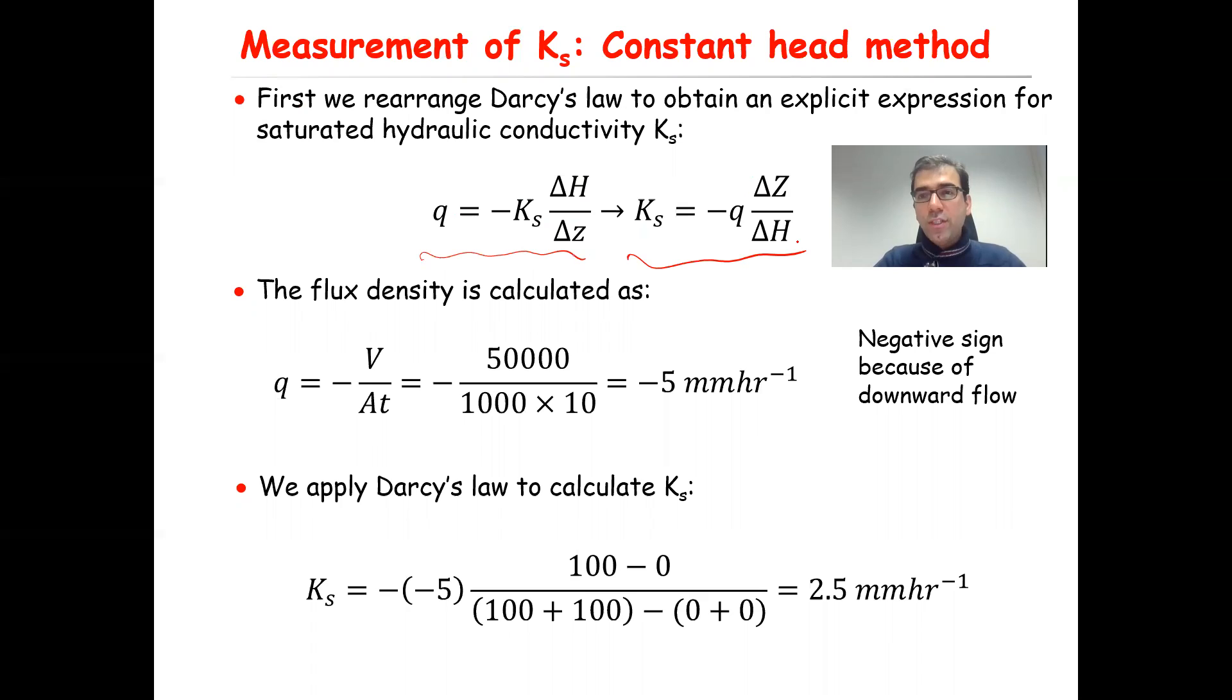Based on the information given in the question, you can calculate the Darcy velocity. The q is equal to minus V, where V is the collected volume of the outflow divided by A times t, where A is the cross-sectional area times t is the time required to collect that outflow.